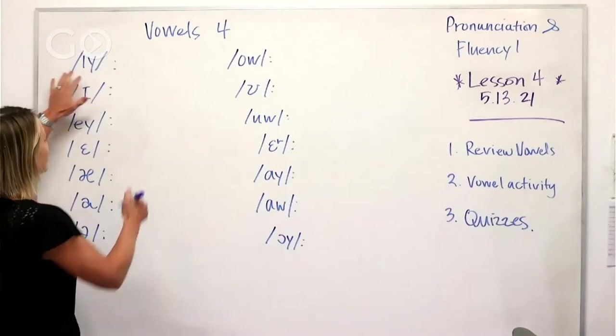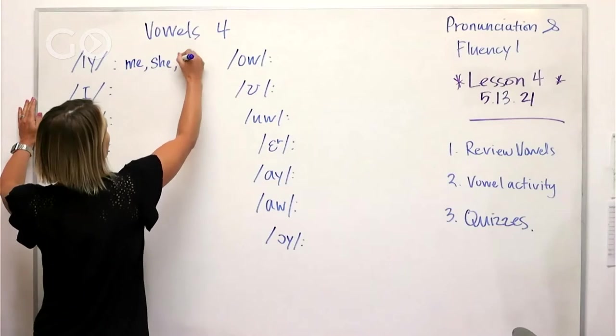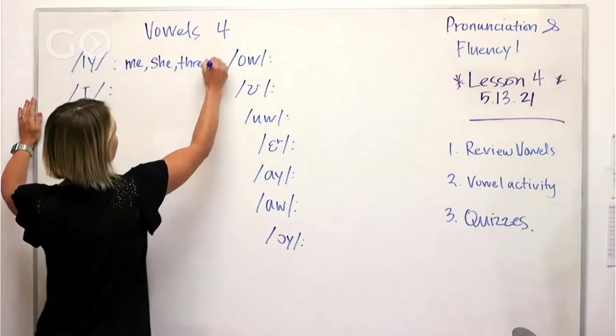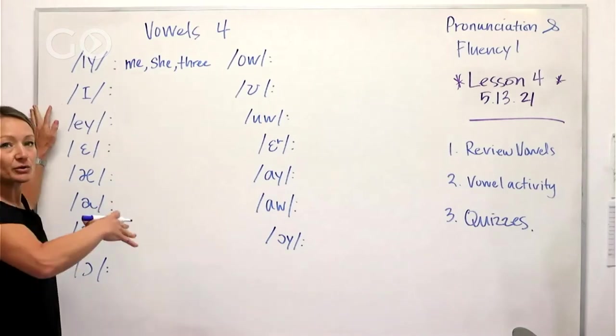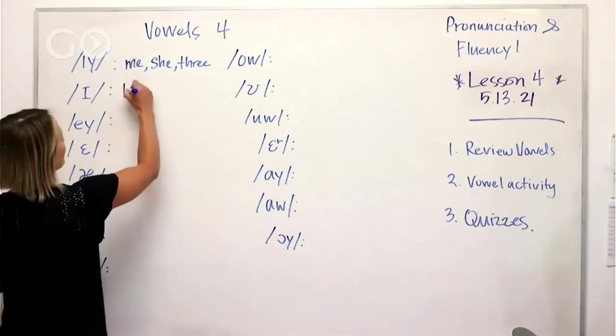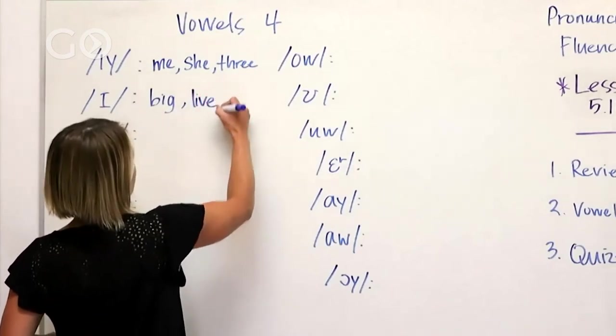This is the long E. We have words like me, she, and three. We're going to just go really quickly through these. We've got big, live - lots of people make that mistake - and did.